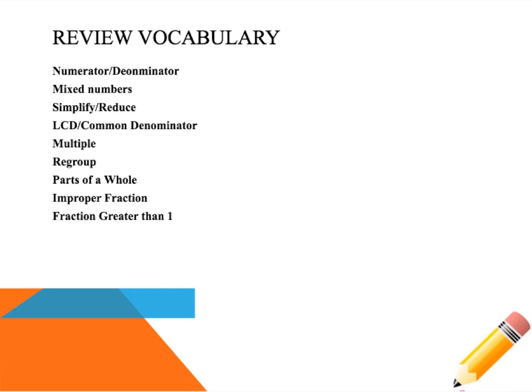Parts of a whole: when talking about fractions, the bottom number is the denominator, which is how many parts are in the whole, and the top number is the numerator, which is how many parts we have out of those parts. An improper fraction and a fraction greater than one are the same thing — called by two different names. It just means that the numerator is bigger than the denominator, which means it's greater than one.